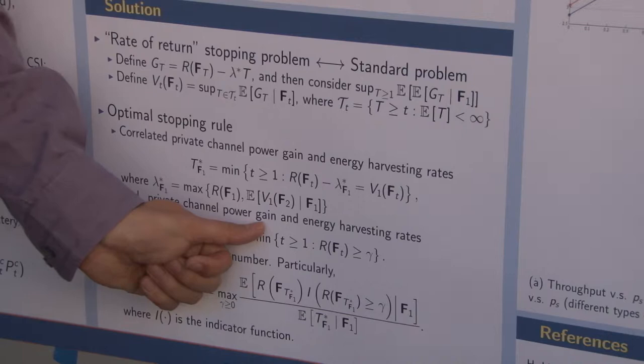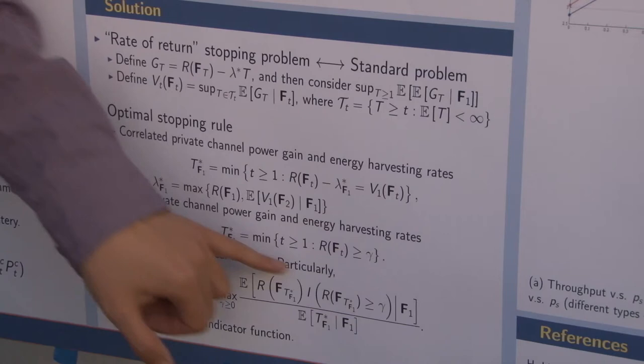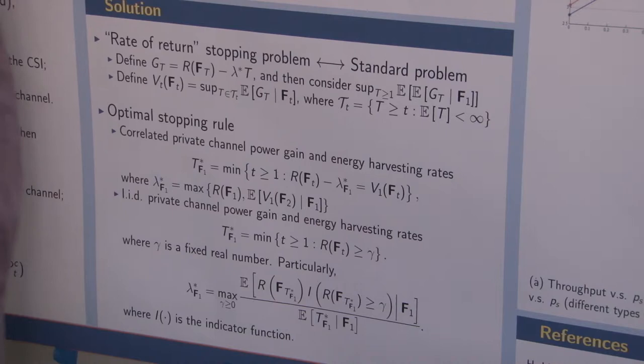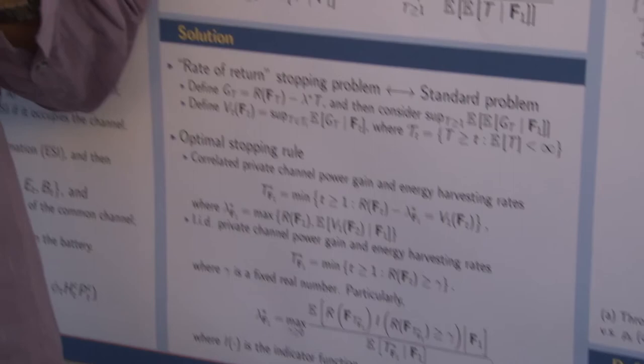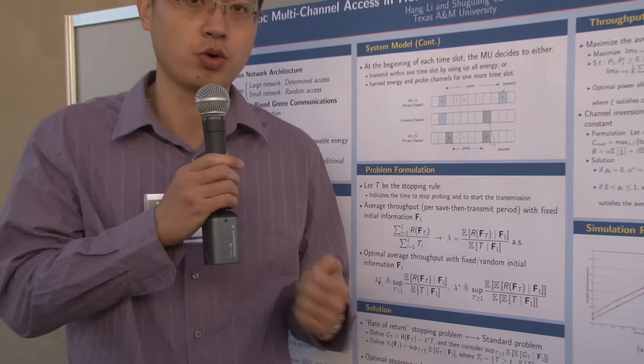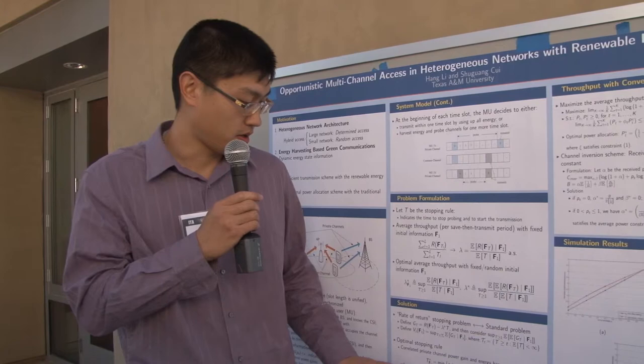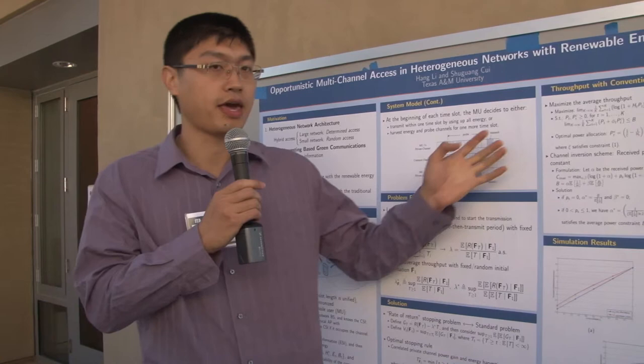And an interesting case is when the channel state power gain and the energy harvesting rate is i.i.d. The stopping rule turns out to be a very efficient way with just a fixed threshold, which means at a given time slot, if the instantaneous transmission rate is beyond this threshold, then the transmitter will decide it's a good time to transmit. That's the solution for this optimal stopping problem.